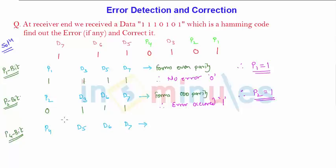But what is the condition here? p4 is 0, d5 is 1, d6 is 1, d7 is also 1. Hence they form once again odd parity. That is nothing but there is an error.